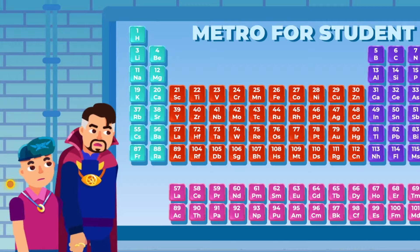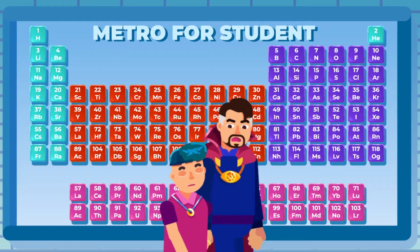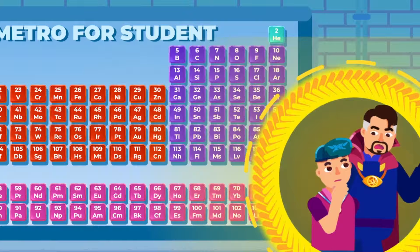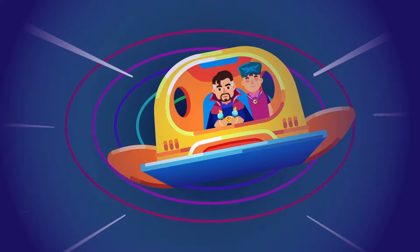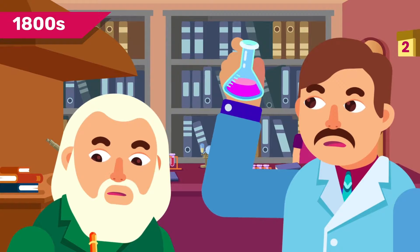There are still many others with their own distinct characteristics that have been discovered. All of the elements are arranged periodically, based on their properties and similarities in one periodic table. The periodic table is a table of substances that lists all of the elements we currently know about.